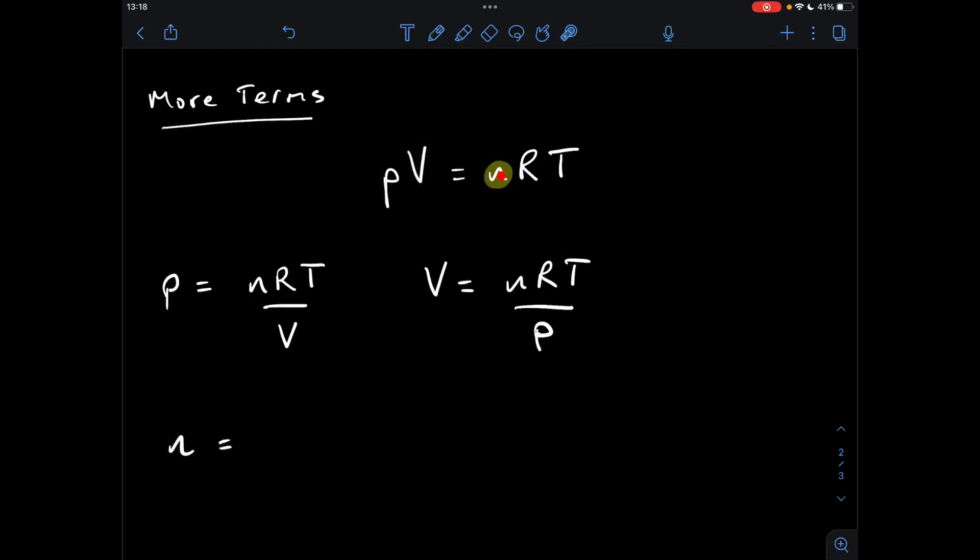So moving on to n now, so we've got R and T in the way, so they're all multiplying each other at the moment, so we're going to take them both onto the bottom. And finally T, so n and R need to be gotten out of the way, all multiplying at the moment, so we take them onto the other side, and divide by them.